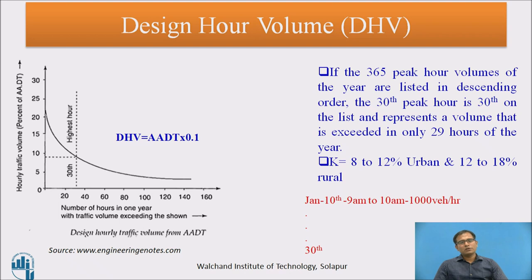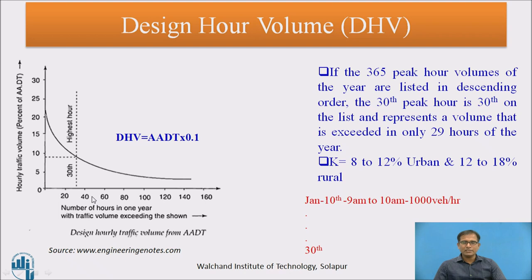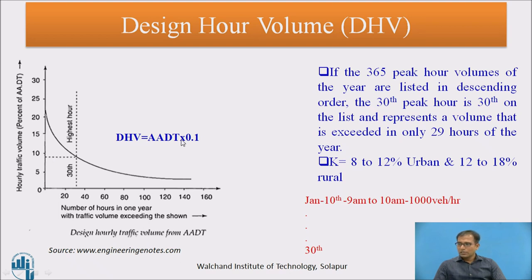To understand the 30th highest hourly volume: on the x-axis, we take the number of hours in a year with traffic exceeding the shown value, and on the y-axis, we take hourly traffic volume as a percentage of AADT. Drawing a line at the 30th hourly volume gives a decimal value — approximately 0.09 or 0.1 — which is the percentage of AADT. Multiplying 0.1 by the AADT gives the design hourly volume. That proportion of AADT is your K factor.